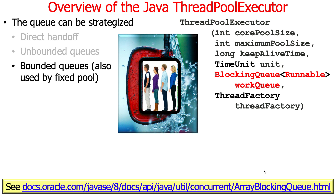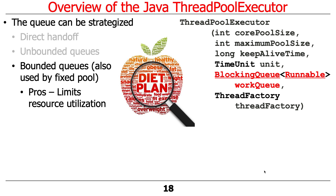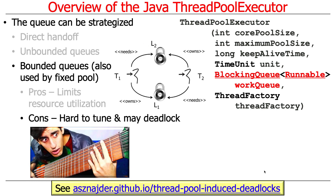Yet another type is a bounded queue, such as an array blocking queue with a fixed size. This can also be used with a fixed-sized thread pool — you configure the thread pool executor yourself rather than using the factory methods in the executors utility class. The benefit is it limits resource utilization since the queue won't grow without bound. The downside is it can be hard to tune and may cause deadlock — you have to figure out what the right size should be.